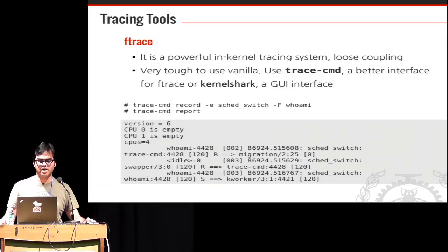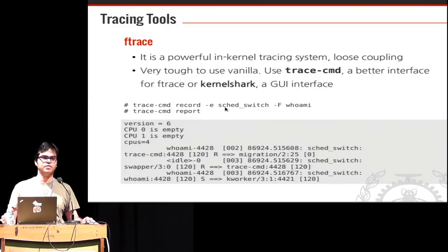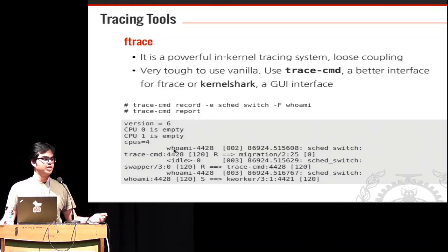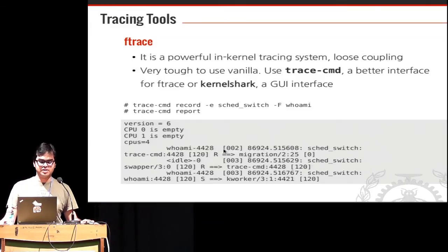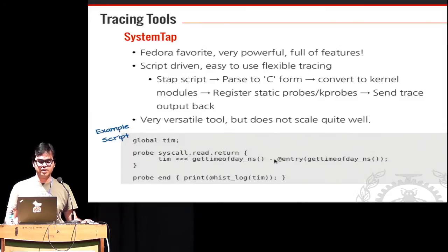ftrace is really powerful but a bit difficult to use directly. Tools built on top of it include trace-cmd by Steven Rostedt, and KernelShark which provides a GUI. For the sched_switch event you just do 'trace-cmd record -e sched_switch' for 'whoami', then 'trace-cmd report', and it shows the process name, CPU, which process it switched from, and the target process.